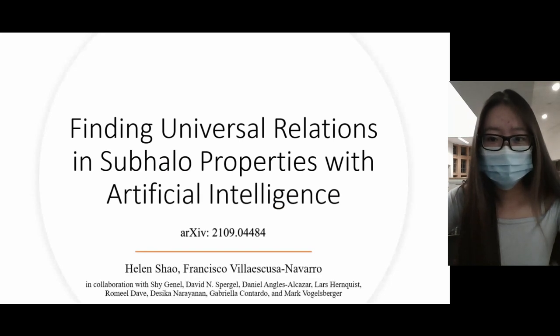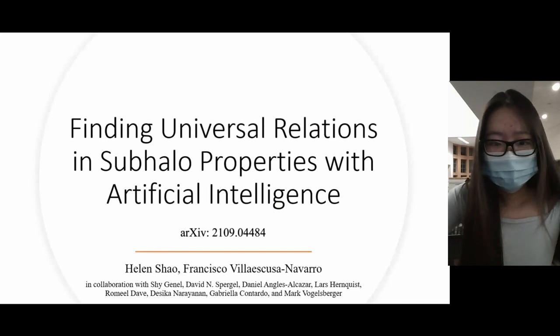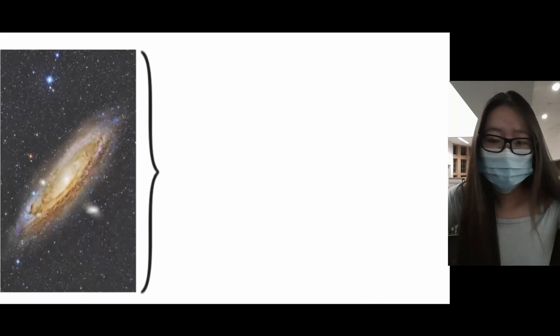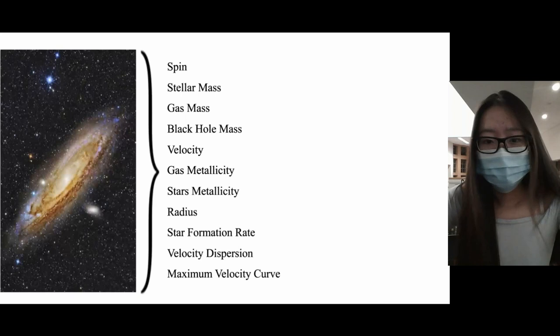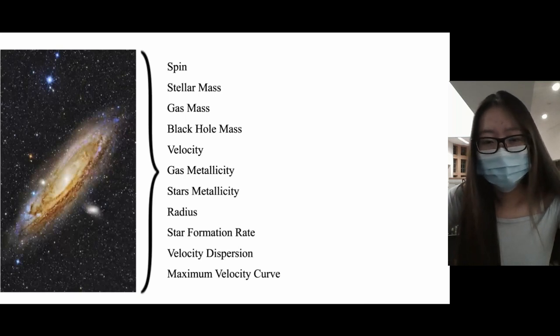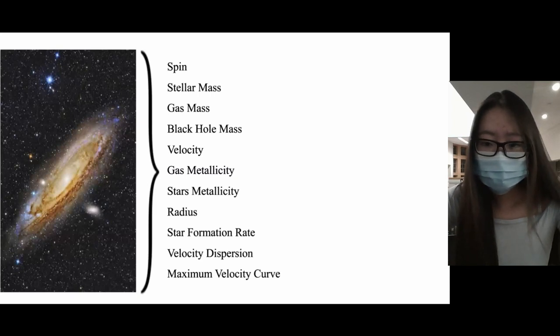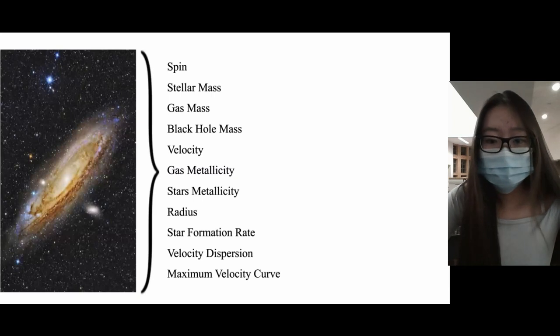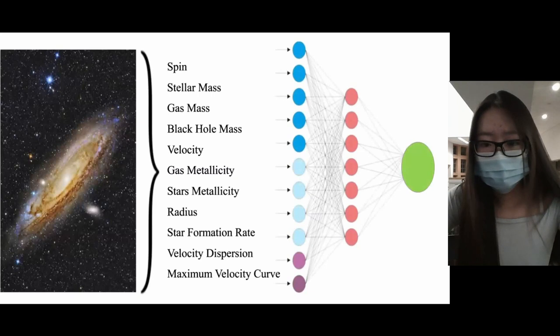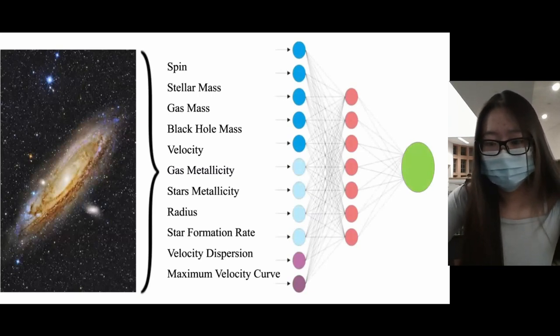In this project, we use machine learning techniques to find universal relations in subhalo properties. Subhalos and galaxies are characterized by many different properties including subhalo spin, stellar mass, and radius. We know that most of these properties are not independent and there are correlations between them induced by their underlying physical mechanisms. This is where machine learning comes in - we feed neural networks the input subhalo data and it finds a way to map from these variables to a target variable.